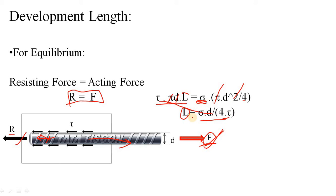So the equation for development length is: L equals strength (sigma) into diameter (D) divided by 4 times bond strength (tau). Read it as: strength into diameter of the bar divided by 4 times bond strength. The three parameters for calculating development length are: strength of the steel, diameter of the bar, and bond strength — which depends on the grade of concrete.